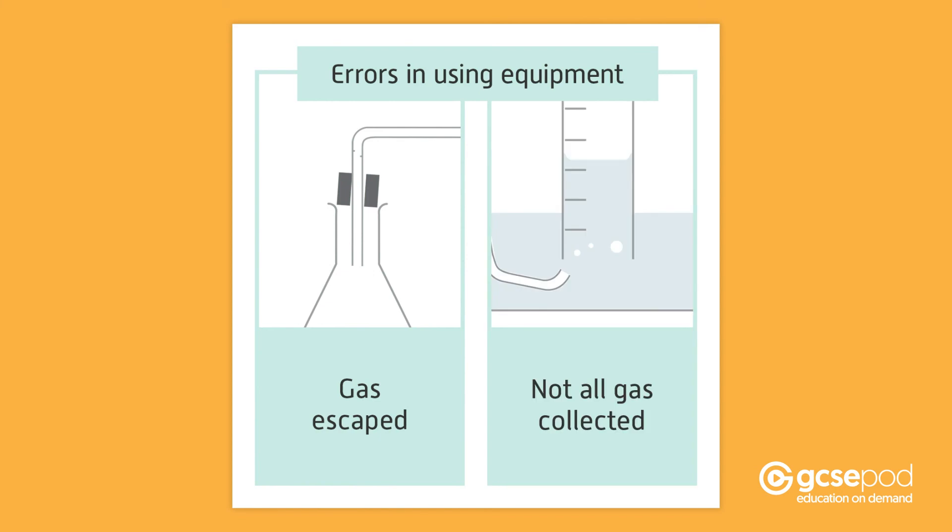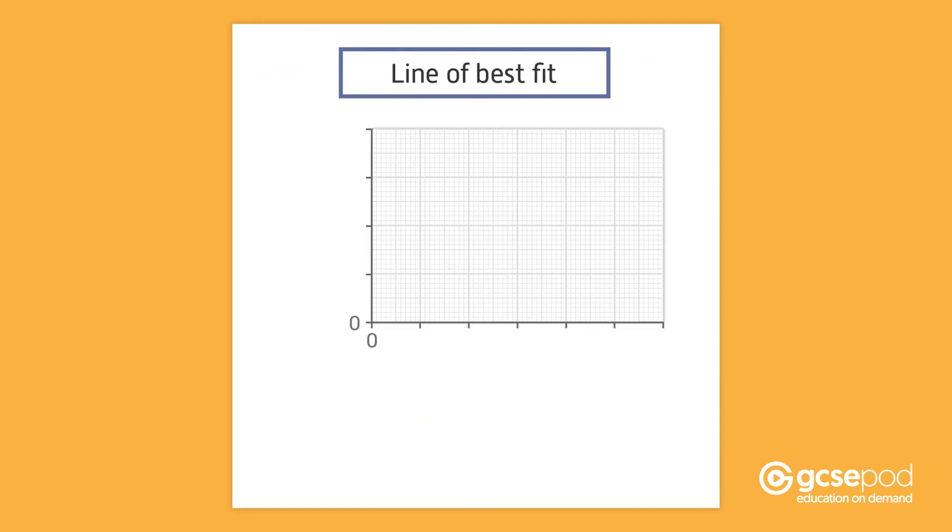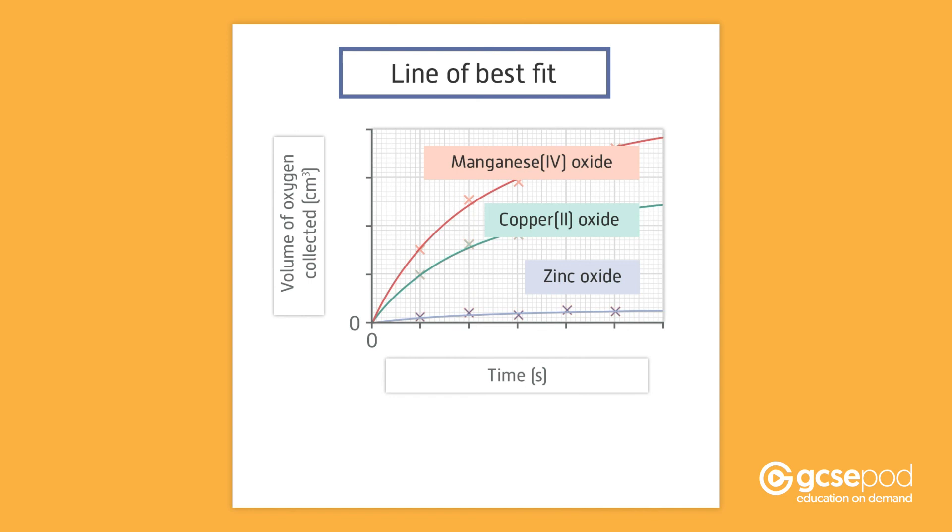When you have collected your results, you can analyze them by drawing a line graph with a line of best fit. Plot the volume of oxygen gas on the y-axis against time in seconds on the x-axis. You will need to draw a separate line for each of the catalysts, but use the same axes. The graph will help you to see how each catalyst affected the rate of the reaction.